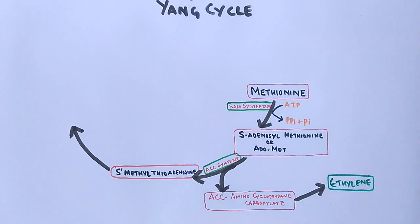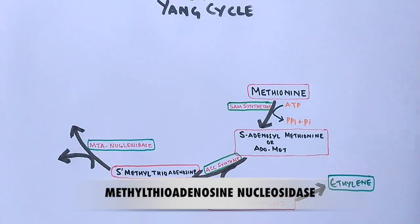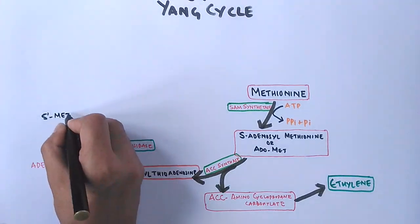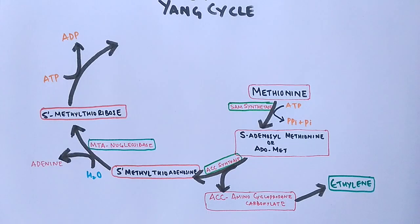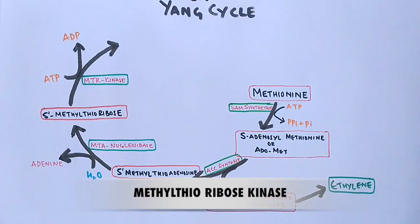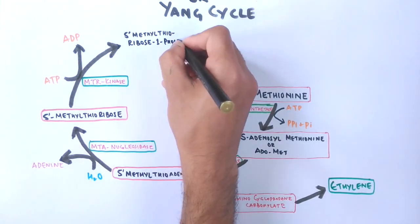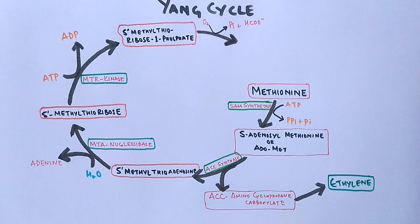The second product, 5-methylthioadenosine, proceeds into the methionine cycle or Yang cycle. It is acted upon by MTA nucleosidase in the presence of water and converts into 5-methylthioribose. After that, a phosphate group is added to 5-methylthioribose by the action of MTR kinase, giving us 5-methylthioribose phosphate.